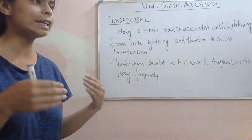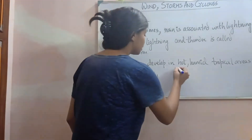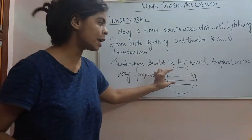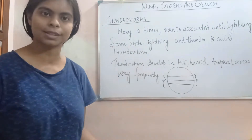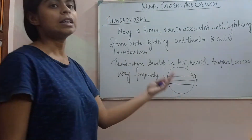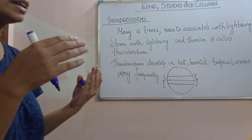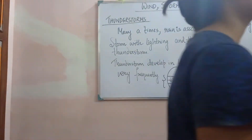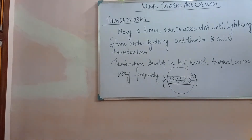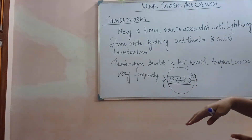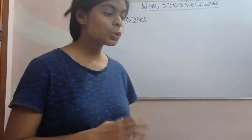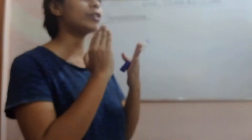Hot humid tropical areas means the areas covered by the Tropic of Cancer to the Tropic of Capricorn — that is called the tropical region. These areas face thunderstorms frequently. The countries and lands present in this region generally face this kind of phenomena. So in a better way we can say that strong wind with rain, lightning, and thunder all together is called a thunderstorm.